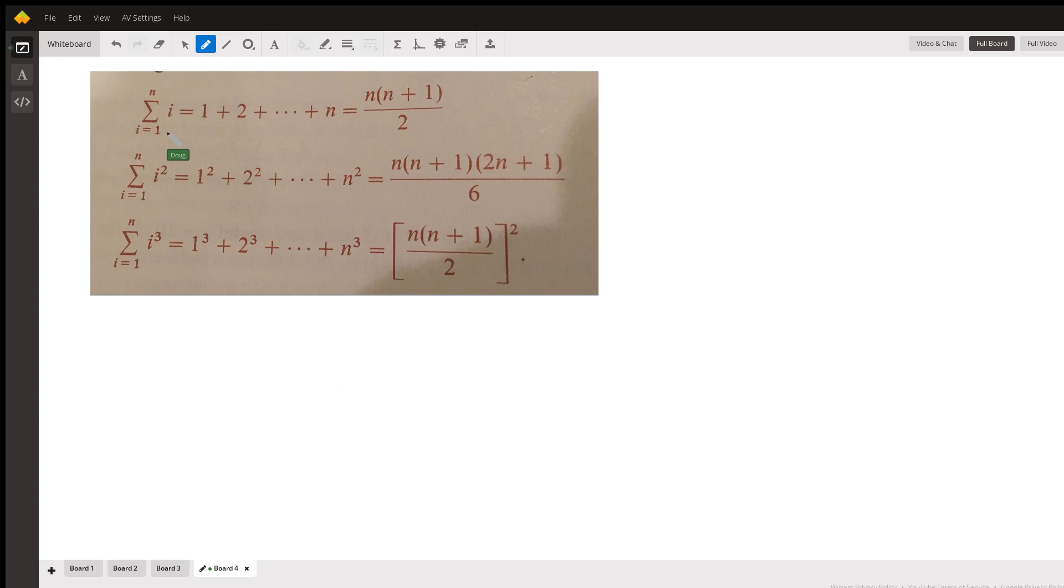The sum from i equals 1 to n of i can be replaced with this—no i's—similarly for i² and i³.